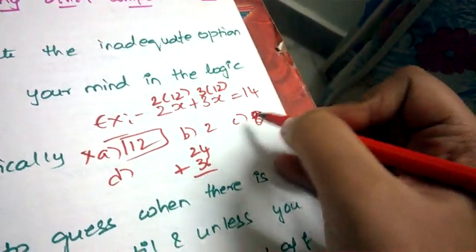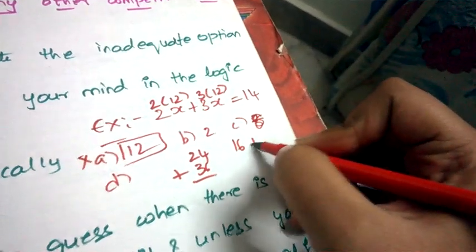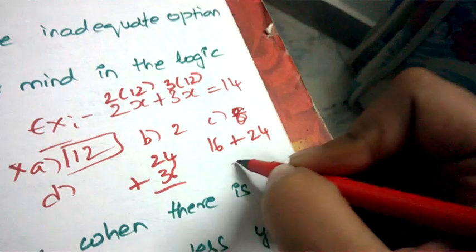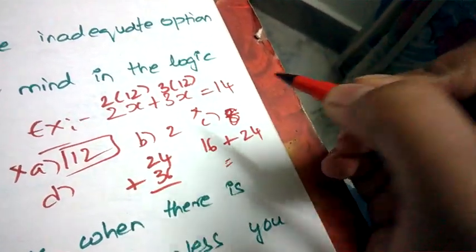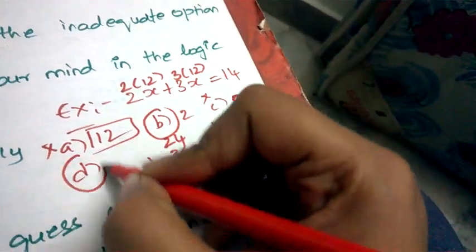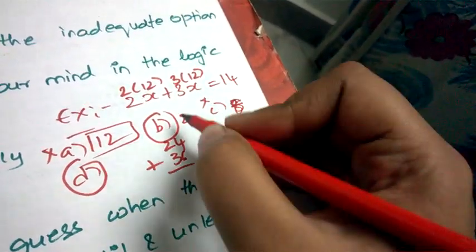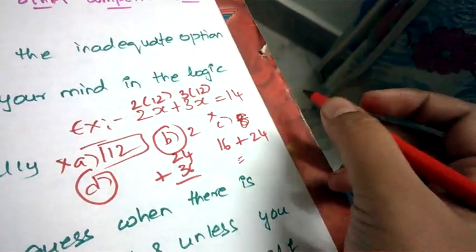Next, the next highest value is 8. 2 8s are 16 plus 3 8s are 24. This also gives you more number as option, so this is also wrong. Now you just have two options, so you have easily eliminated two options. This is called elimination technique. Always try to eliminate the inadequate option.